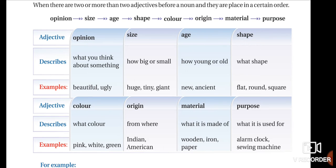The first category is opinion — what do you think about something, what is your opinion or thinking about something? For example: beautiful, ugly, pretty, dirty. These come from opinion within yourself. The next one is size — how big, how small, how tall, how short. For example: huge, tiny, giant, small, tall — all these come under size.